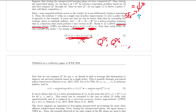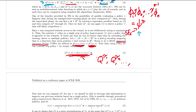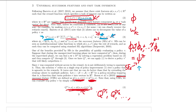That essentially wraps up successor features. Just a summary: successor features breaks down rewards into two parts — the feature vectors and the task vector. The Q function can then be broken down into the successor features and the task vector. Why is this important? If we can learn the successor features, which can be learned without a reward function beforehand, then any time we want to learn a new task, all we have to do is learn the task specification vector w. It's a way to transfer what we've learned to new tasks much more efficiently than if we had to relearn everything from scratch.